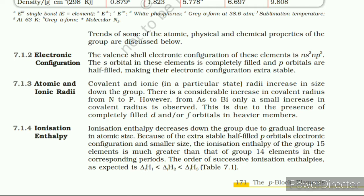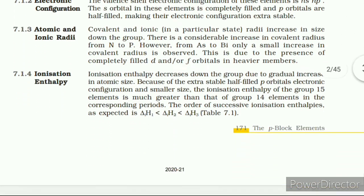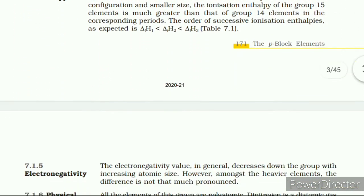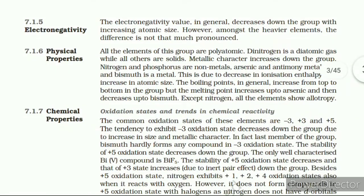7.1.6 Physical Properties. All the elements of this group are polyatomic. Dinitrogen is a diatomic gas while others are solids. Metallic character increases down the group — nitrogen and phosphorus are non-metals, arsenic and antimony metalloids, and bismuth is a metal. This is due to decrease in ionization enthalpy and increase in atomic size. The boiling points in general increase from top to bottom in the group, but the melting point increases up to arsenic and then decreases up to bismuth. Except nitrogen, all elements show allotropy.